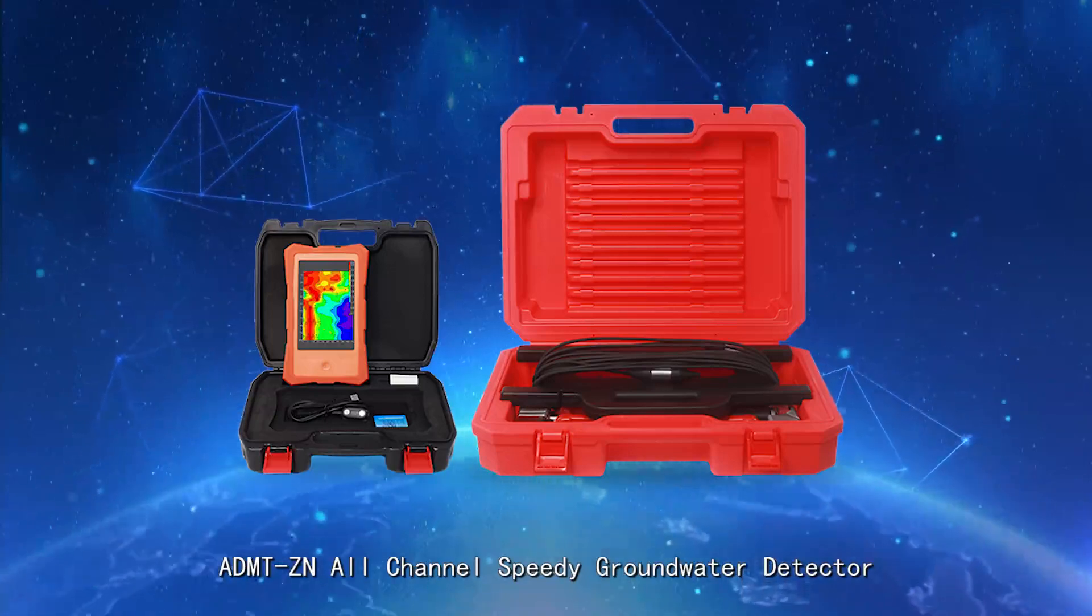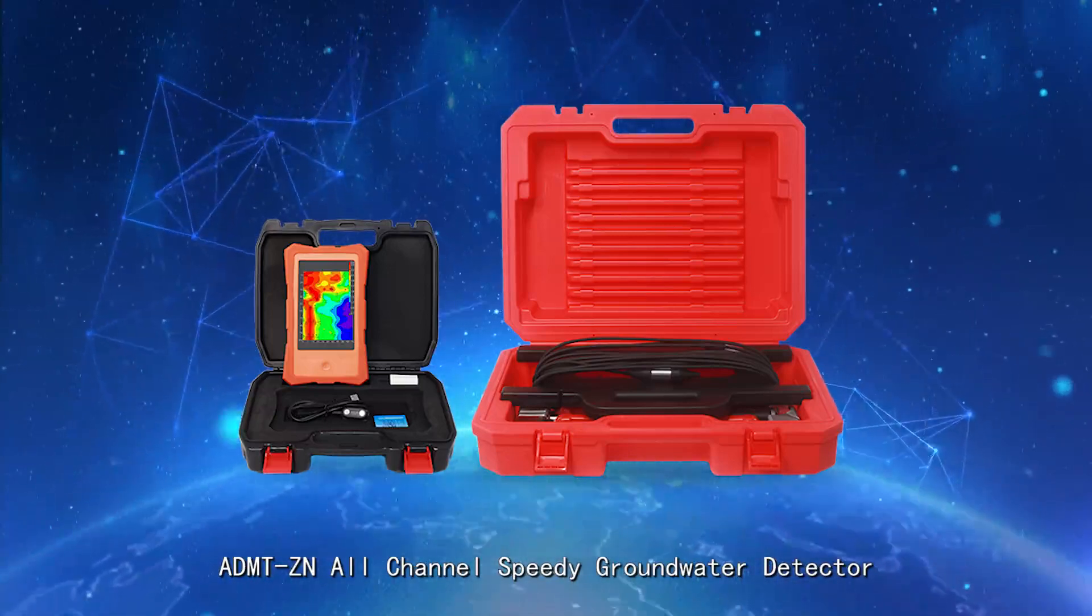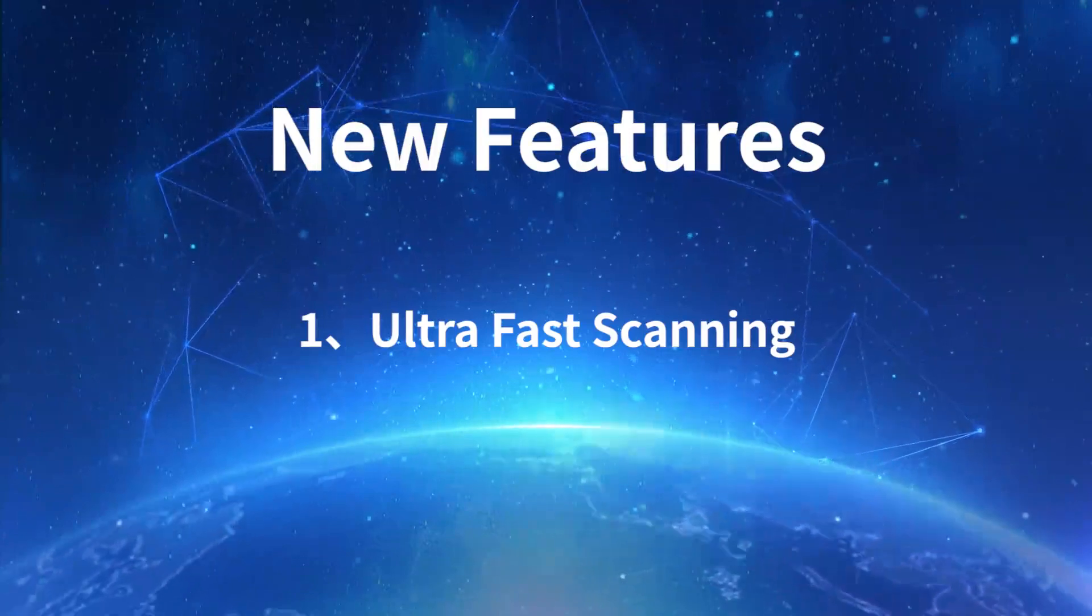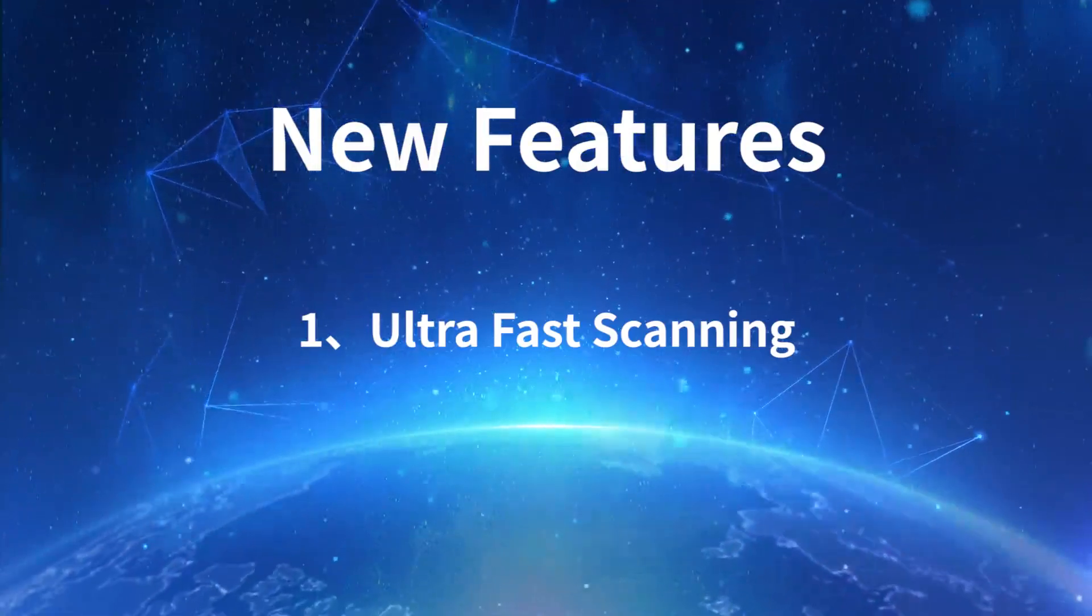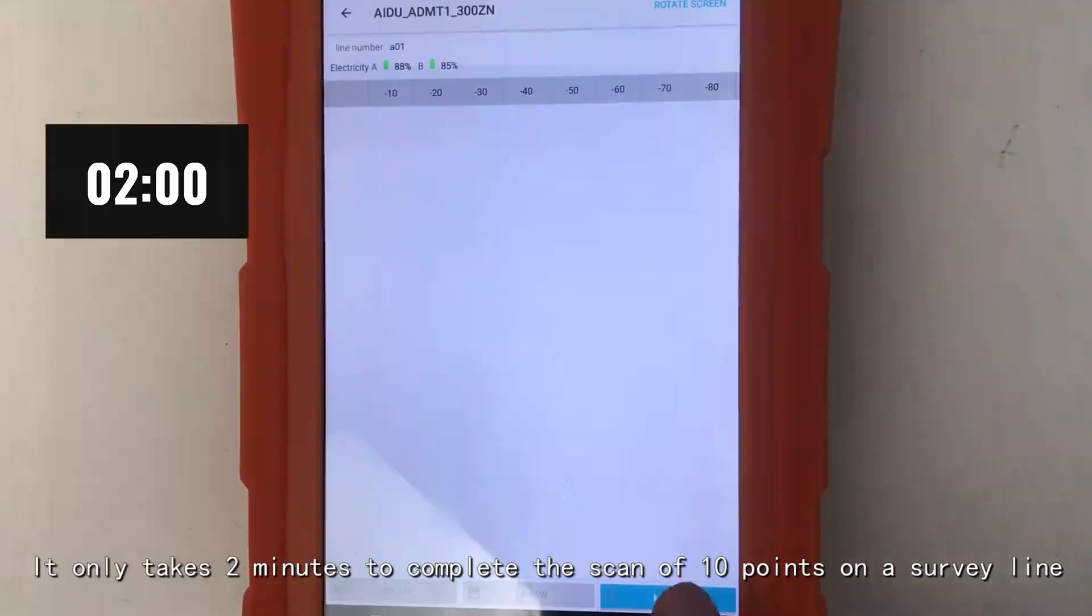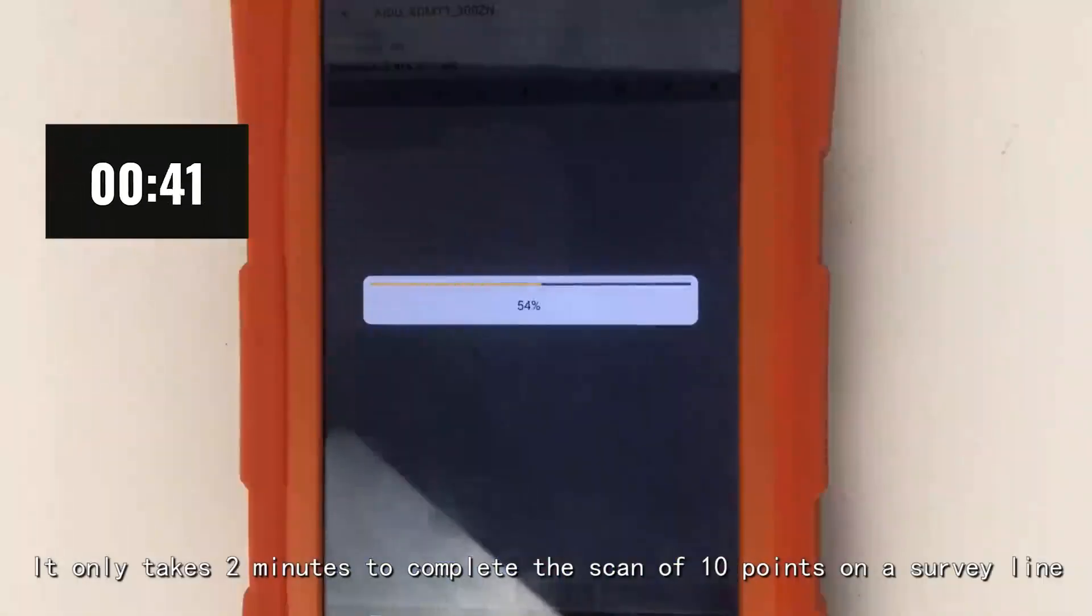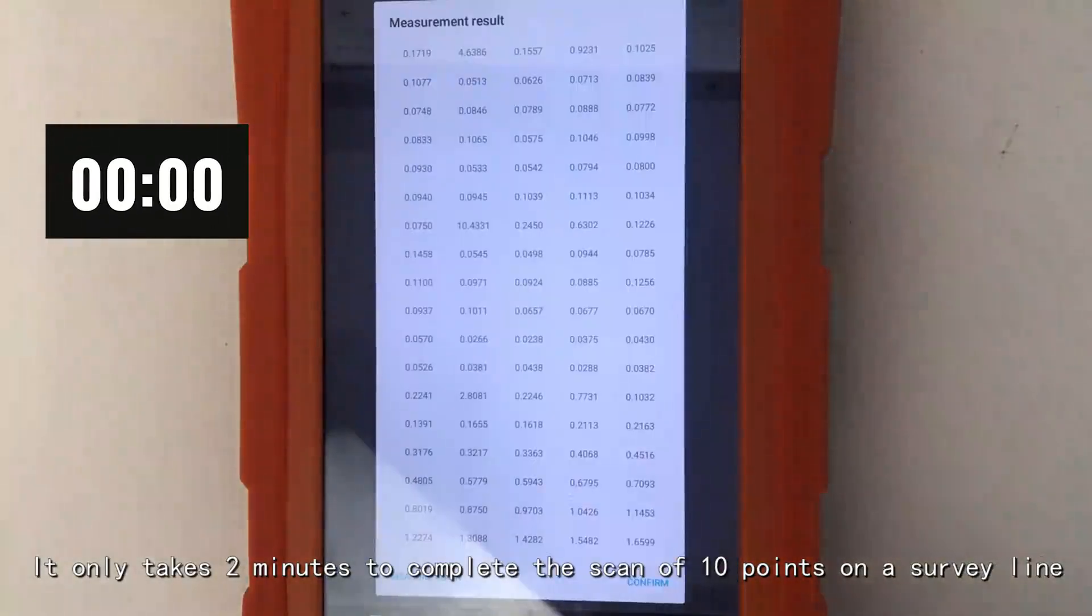ADMT-Z and all-channel speedy groundwater detector. New Features. Feature 1: Ultra-Fast Scanning. It only takes 2 minutes to complete the scan of 10 points on a survey line.